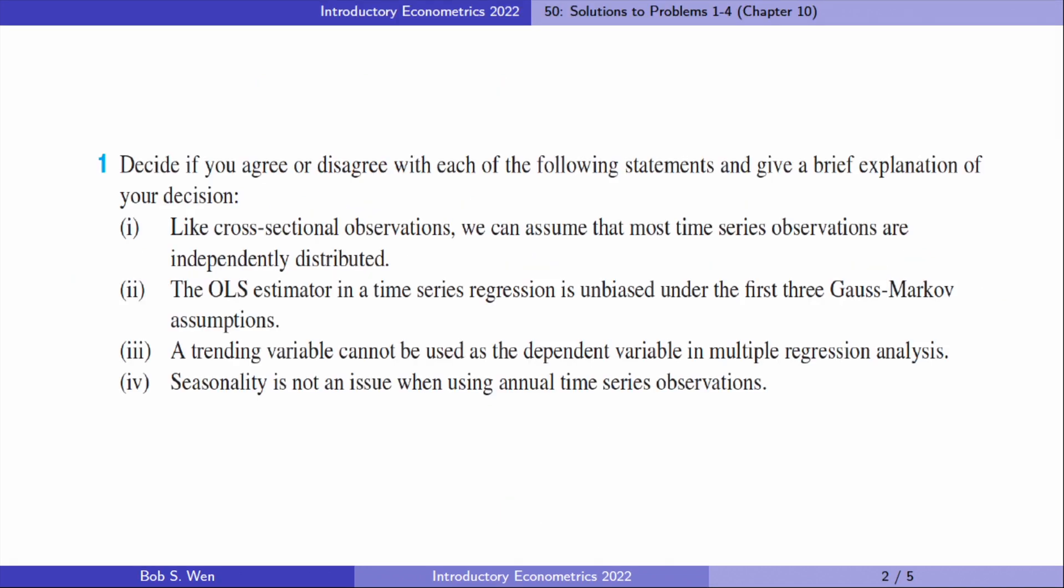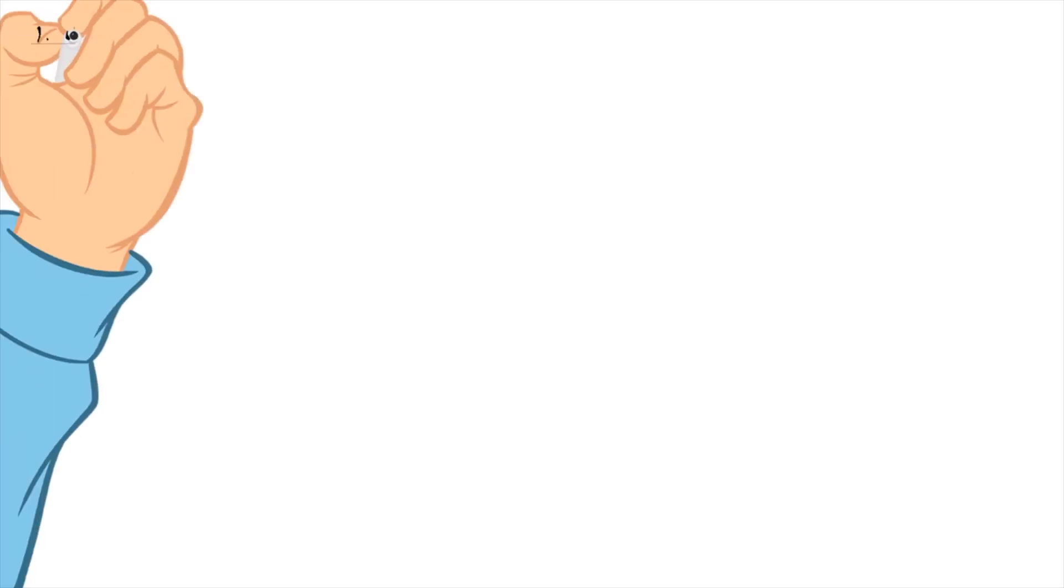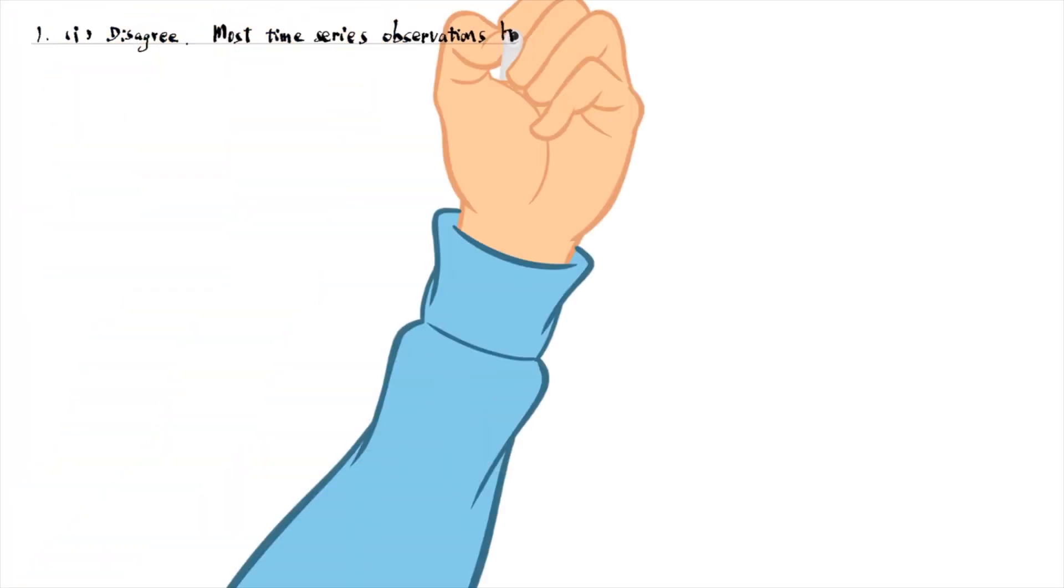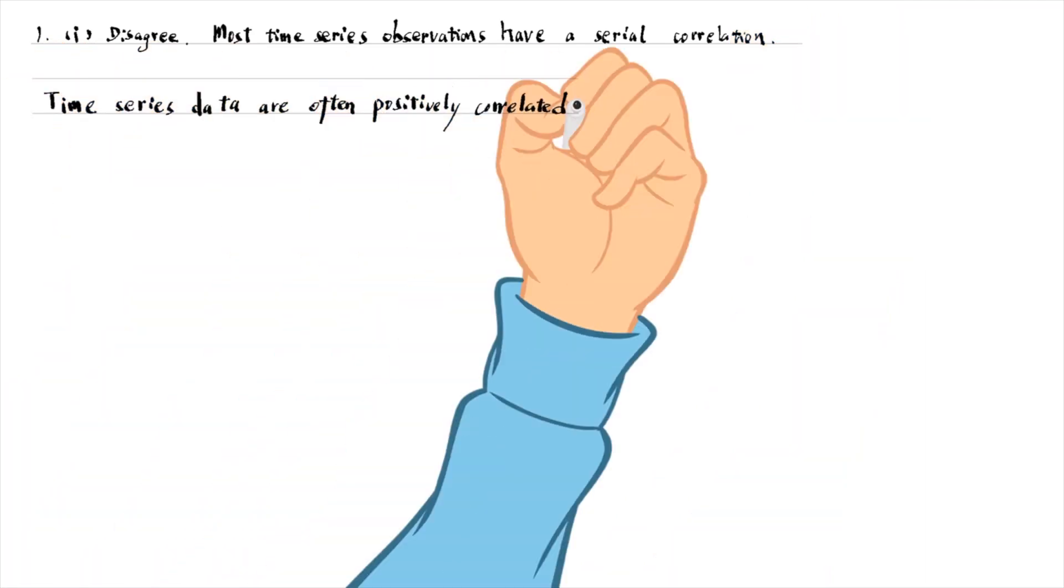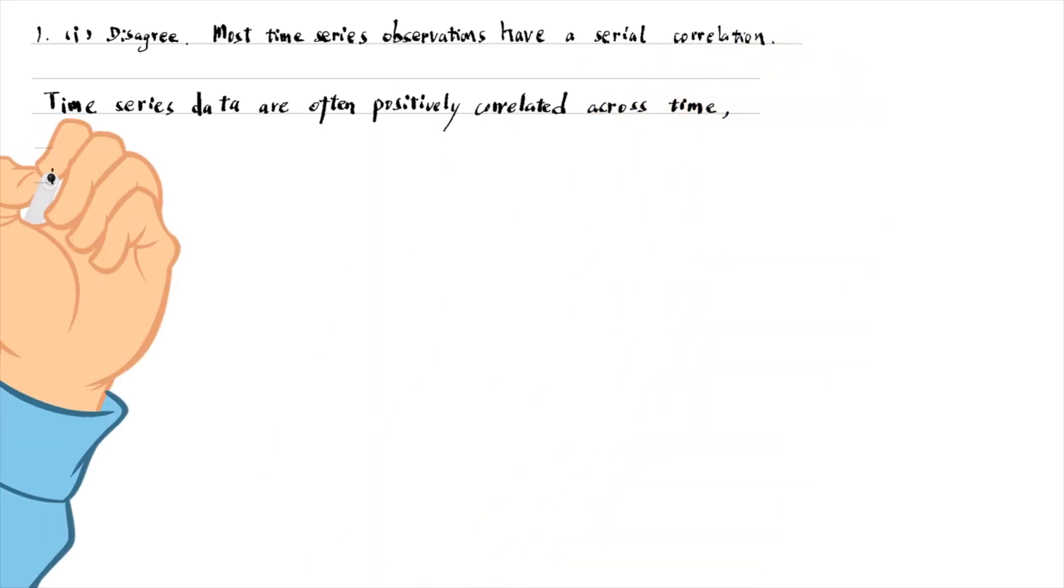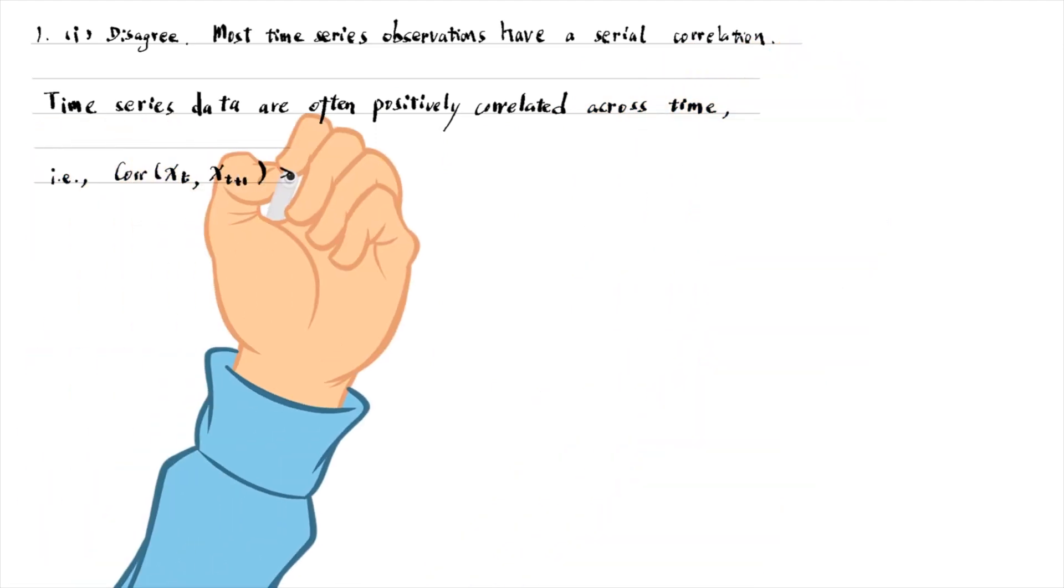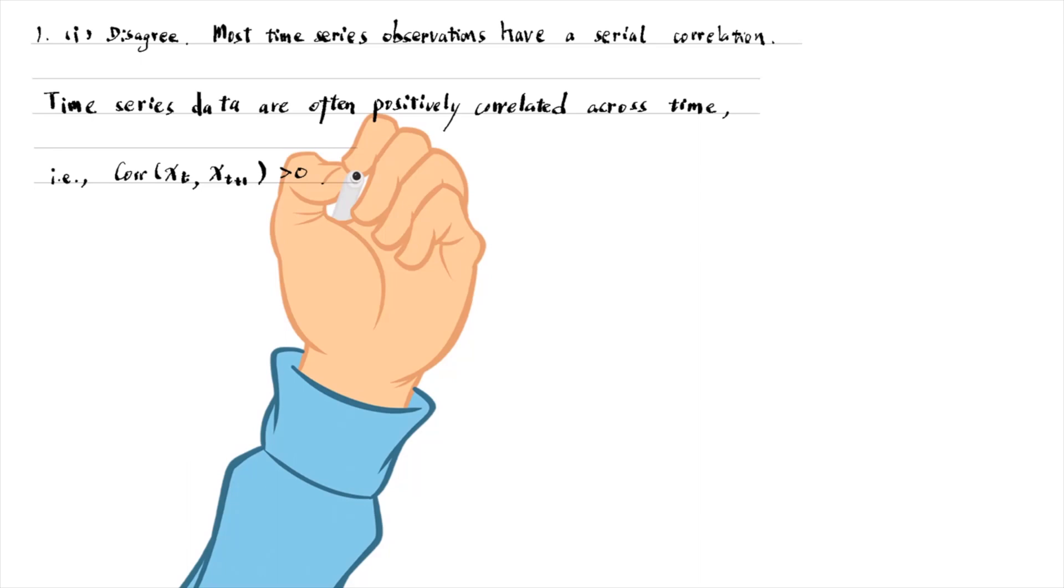My answer to the first question of problem one is disagree. Most time series observations have a serial correlation. Time series data are often positively correlated across time. That is, the correlation between variable in time t and t plus 1 is positive.